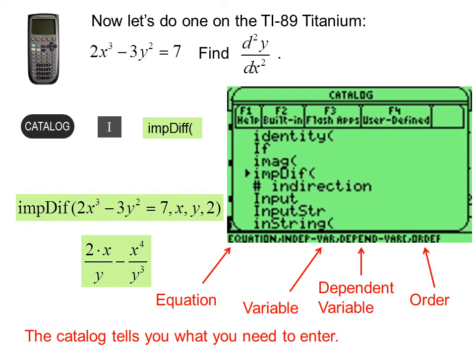2x over y minus x to the fourth over y cubed, which is the second derivative, and the same answer we got doing it by hand.